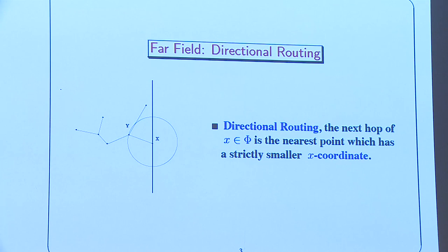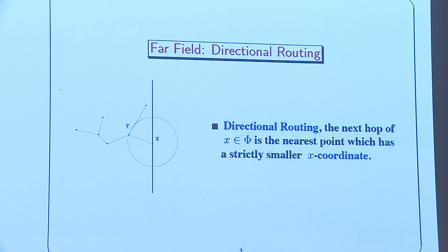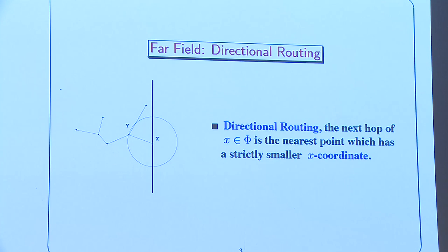There is a far-field incarnation called directional routing. If you want to go to Austin and you are in Paris, you pick the point nearest to you on the half-plane to the west. You are at X, you go to Y. As a preview, this point would also go to Y, and this other point would go to yet another one. You send packets by discrete steps using very local information, which is typical in certain wireless networks.